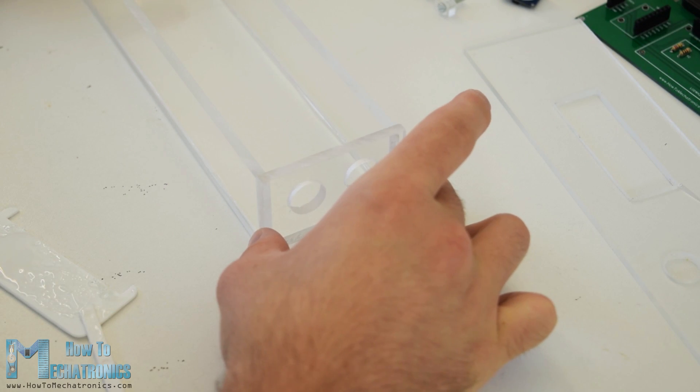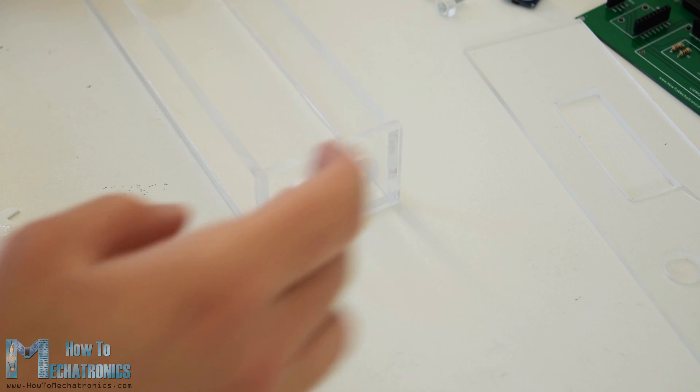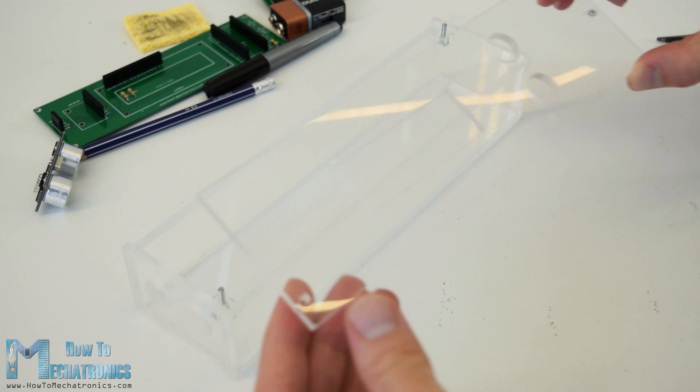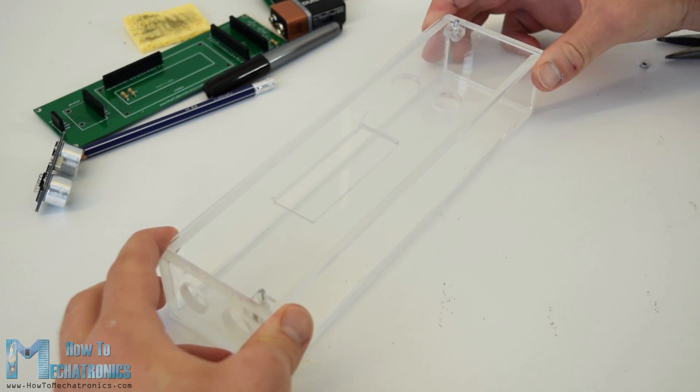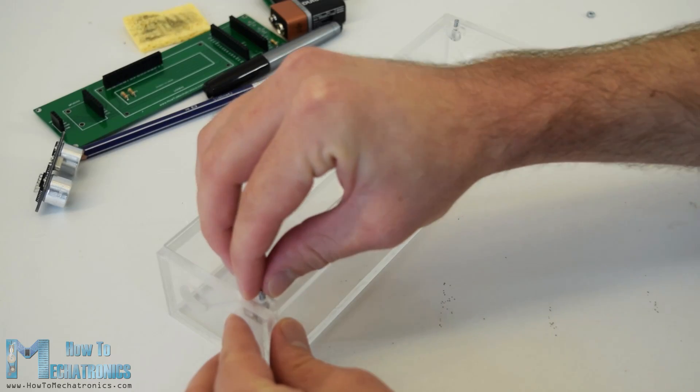Once I had all pieces ready I used a 5 minutes epoxy to assemble the case. As for the top, I inserted and glued two bolts through which the top panel can be inserted and secured using some nuts on top of it.